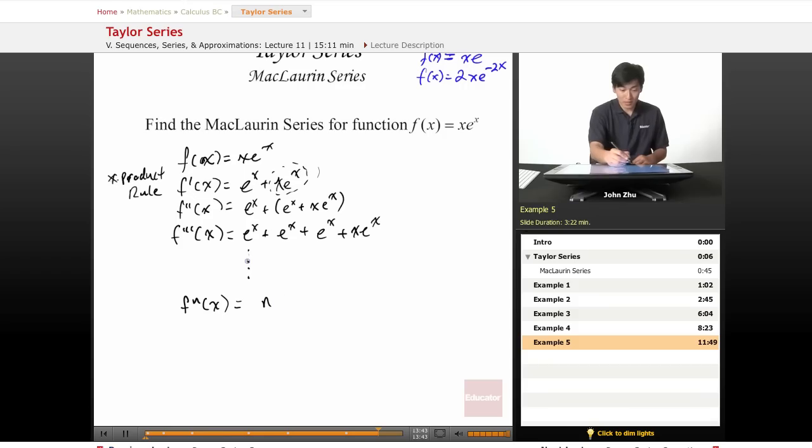That means n is directly related to the order of derivatives. So n times e to the x, plus x times e to the x. There will always be an x times e to the x term at the very end.